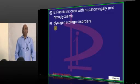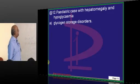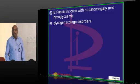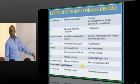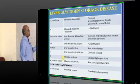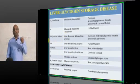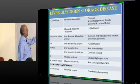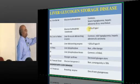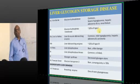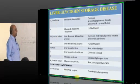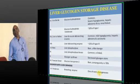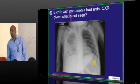A pediatric case with hepatomegaly and hypoglycemia - obviously that is glycogen storage disease. Be quite sure with all the list of glycogen storage disorders: which lead to cirrhosis of liver, which lead to muscle involvement, which present as hypoglycemia. One type shows severe hypoglycemia, hepatic adenomas, and can lead to renal failure. Cirrhosis of liver is seen with Anderson's disease - branching enzyme deficiency.